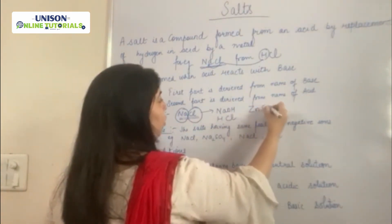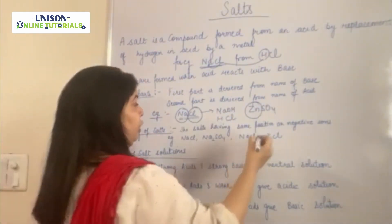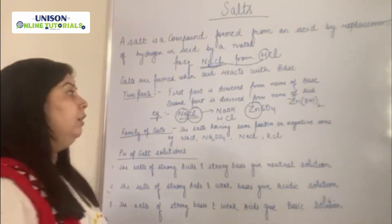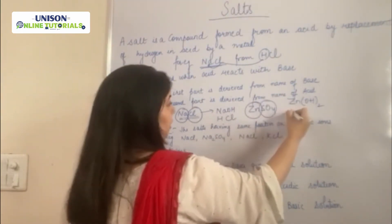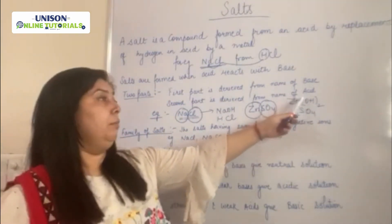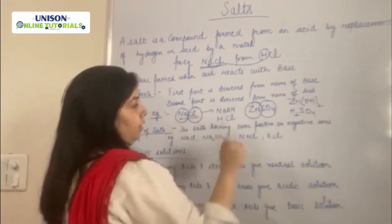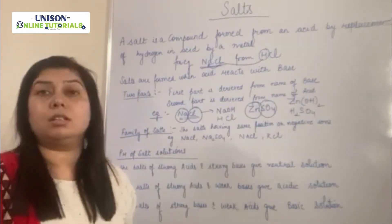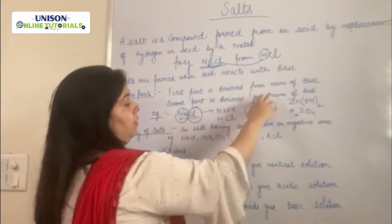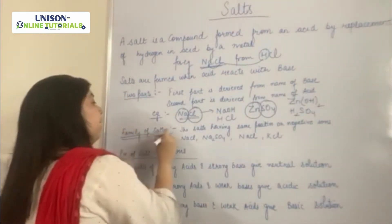Let us take another example: ZnSO4. The first part, Zn, is derived from the base zinc hydroxide, and the second part, SO4, is derived from the acid H2SO4. When you combine zinc hydroxide with H2SO4, you get ZnSO4. So again, one part is from the base and the second part is from the acid.